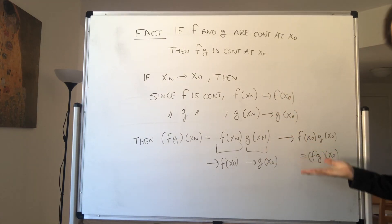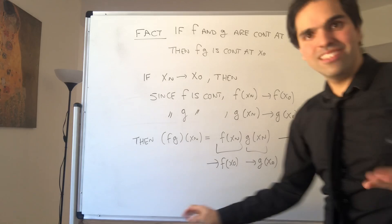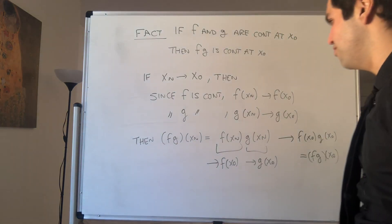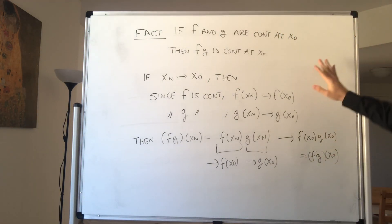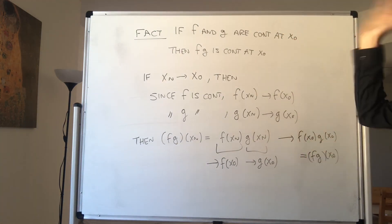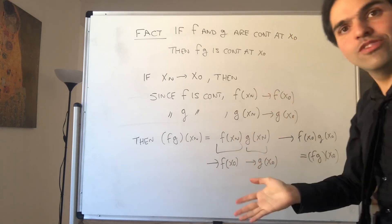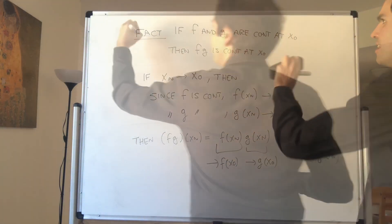However, this is a bit of cheating because it assumes the corresponding result for sequences. Instead, let's just do it directly with the epsilon-delta definition.